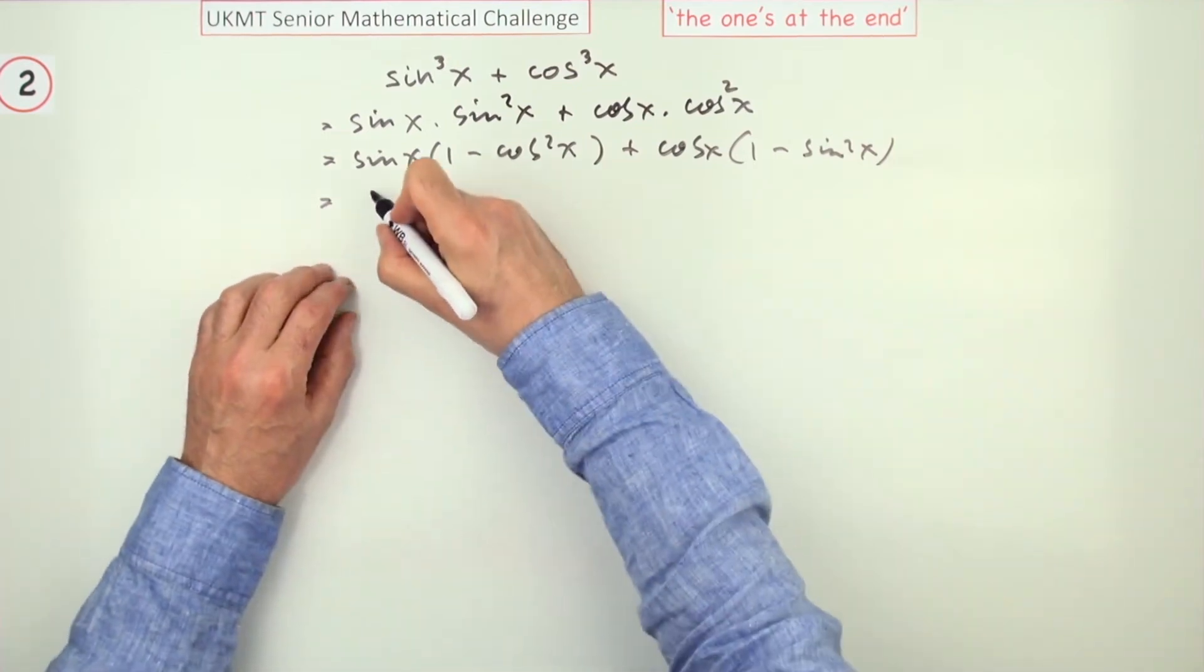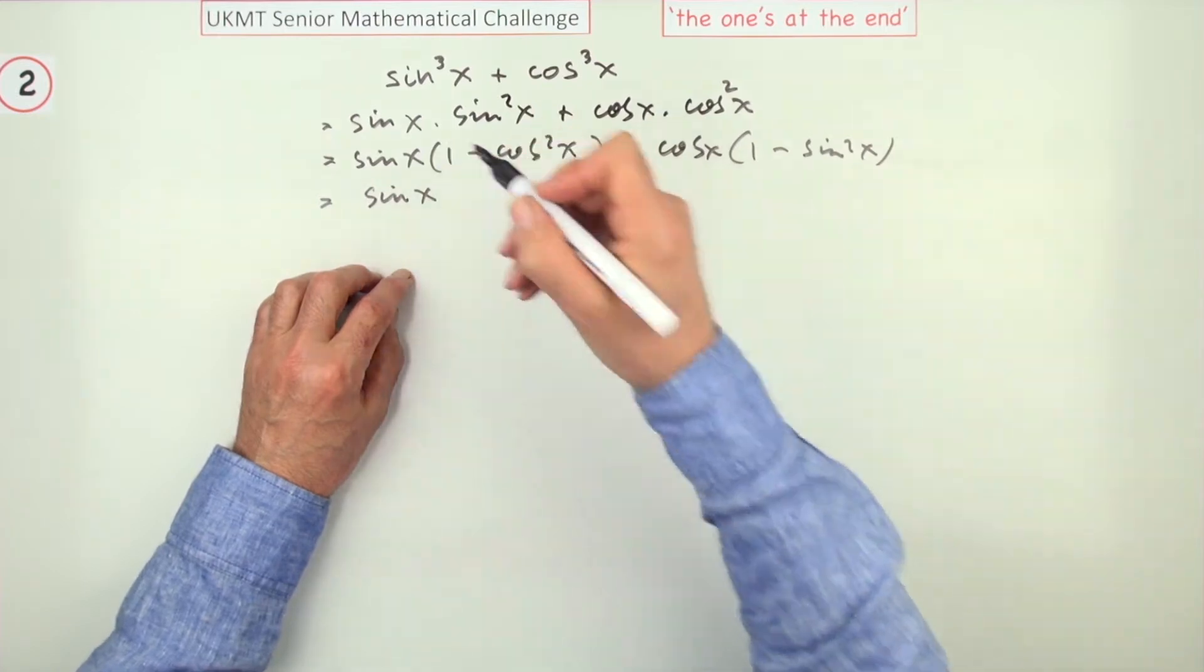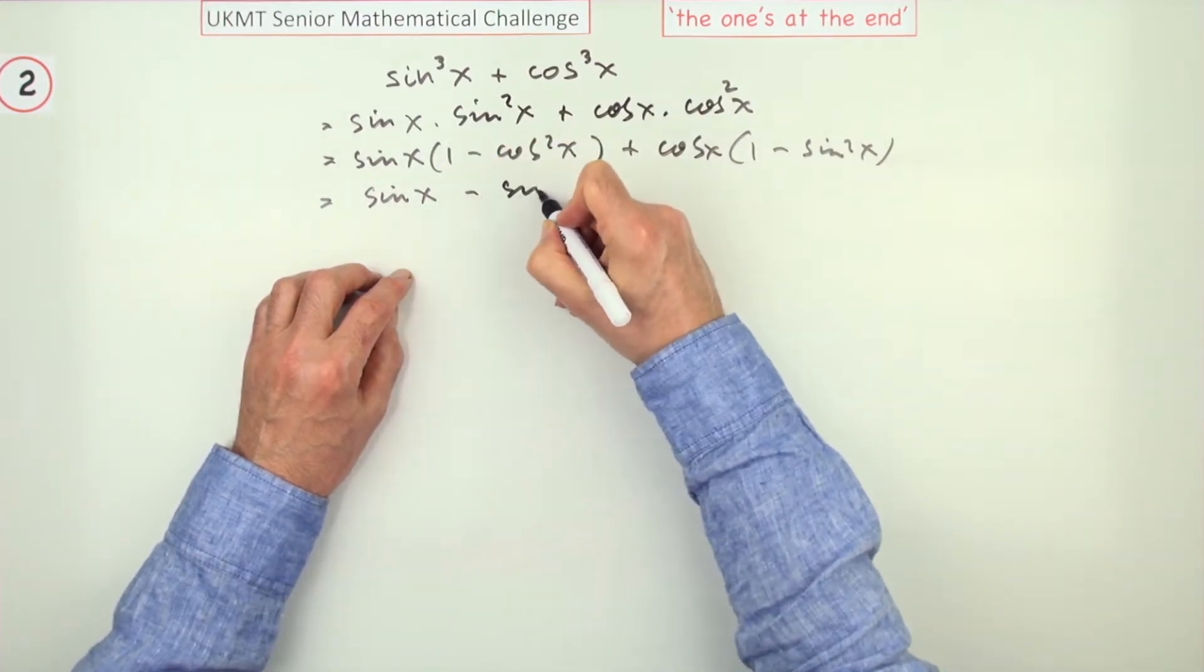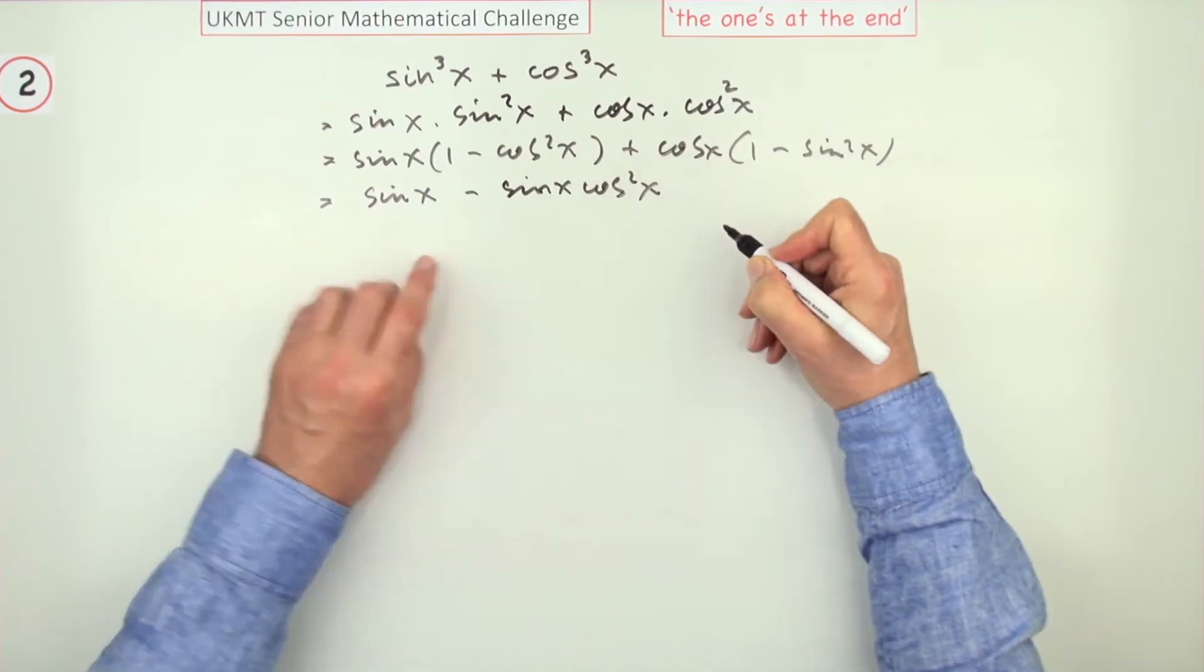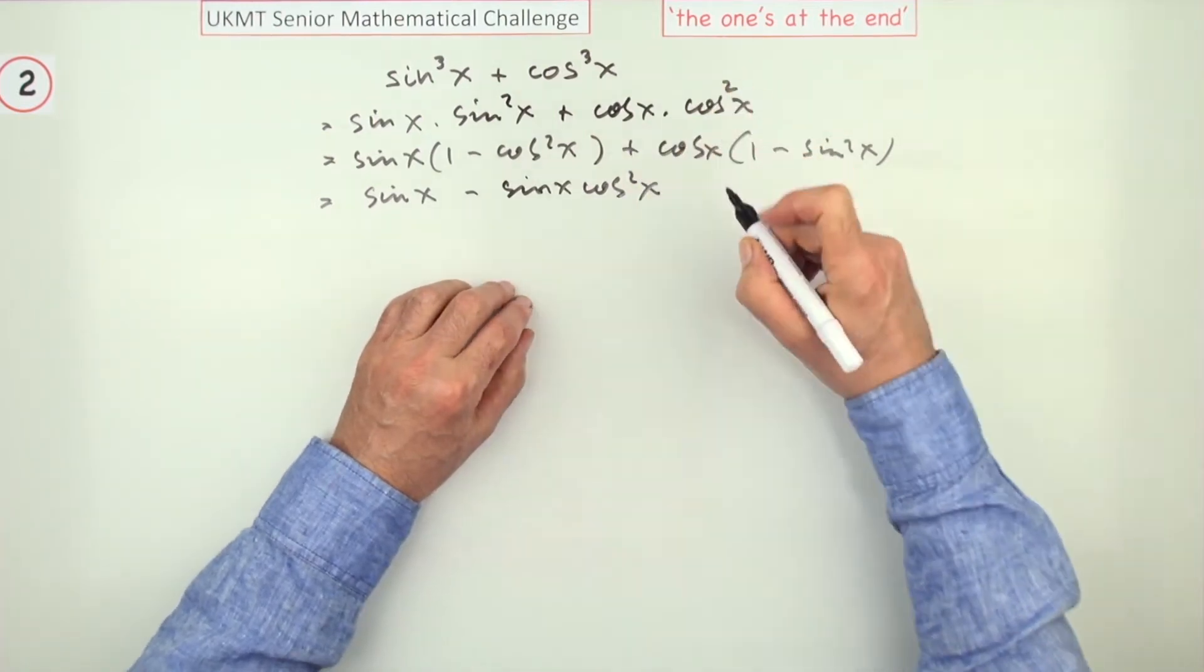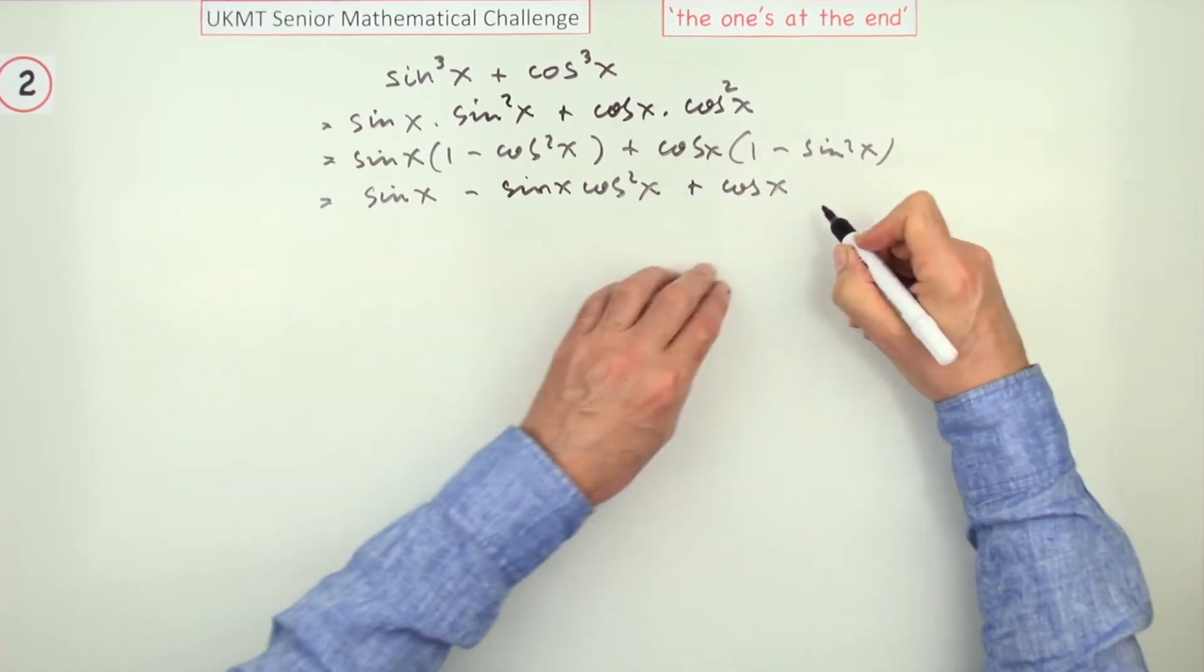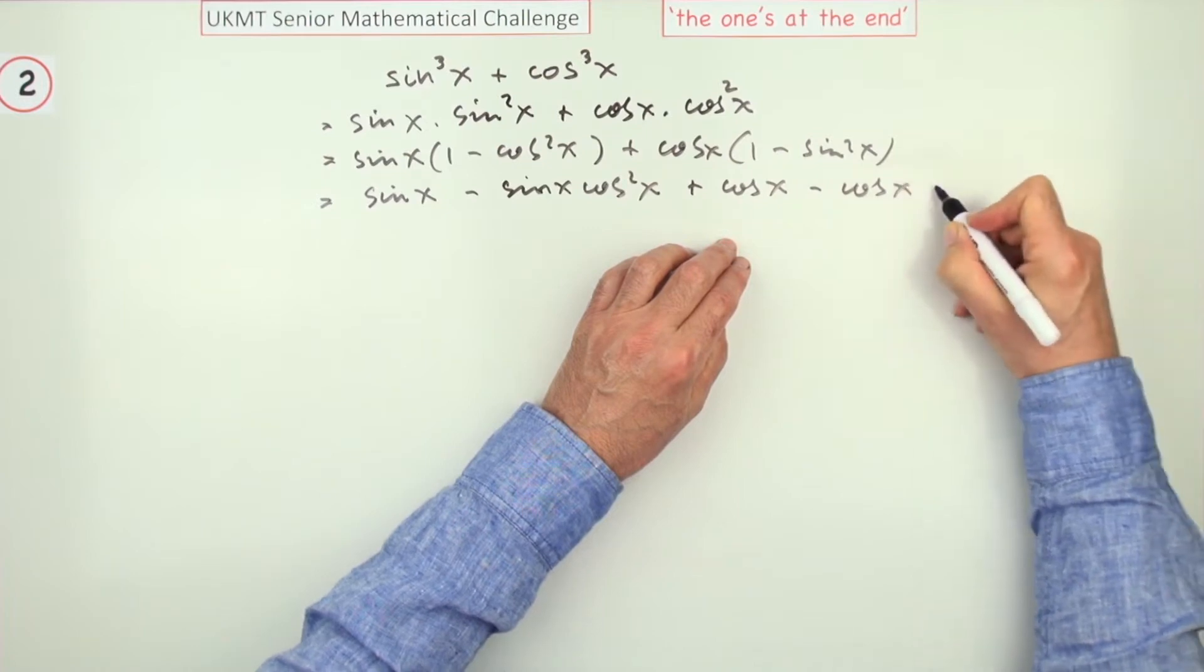Now expand that. That'll isolate a sine x. I notice that in some answers an isolated sine x, but minus sine x cos squared x. But that's not bad because look you've got a sine x cos x, that's one of those patterns that you know.